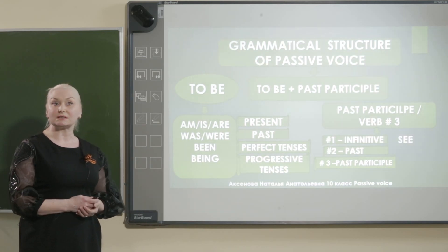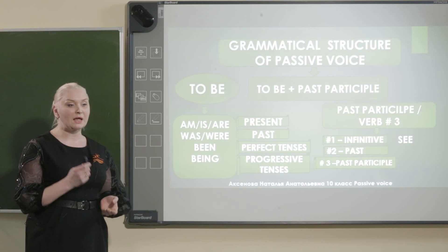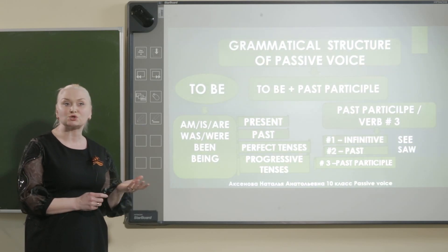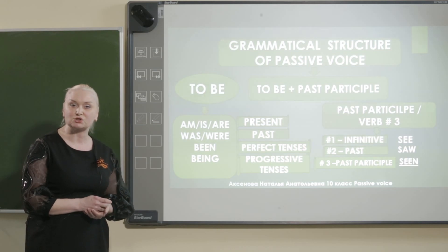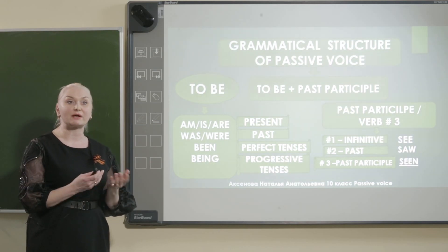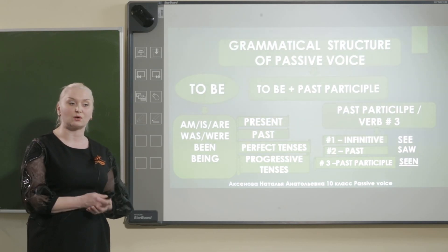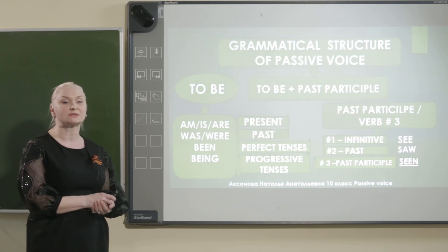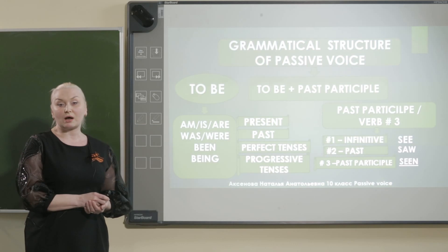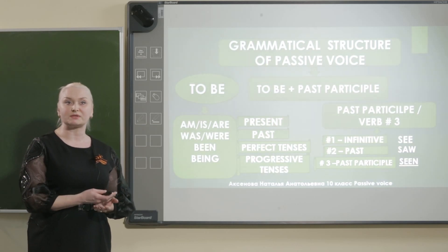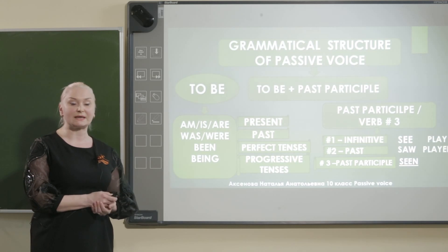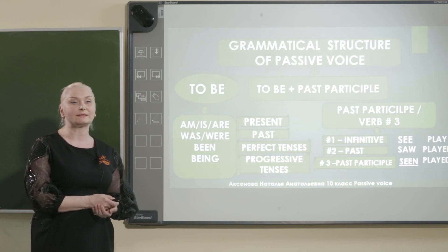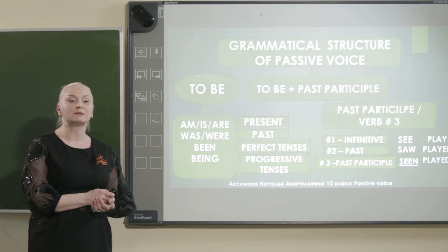Look at this. See — that's the infinitive form. Saw — for past. And for past participle, it should be seen. Это форма неправильного глагола, и поэтому мы работаем в страдательном залоге с третьей формой. But for regular verbs, there is the verb play — that's the first form. Played — that's the second one. And played — that's the past participle.